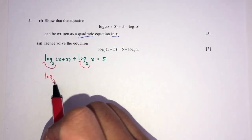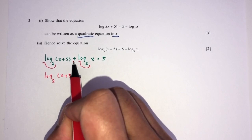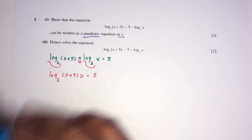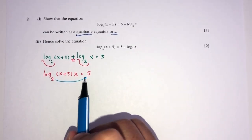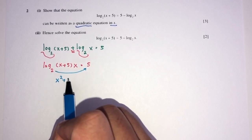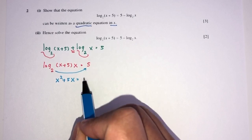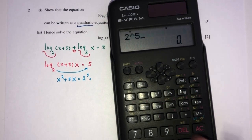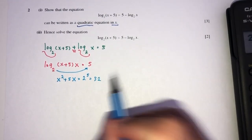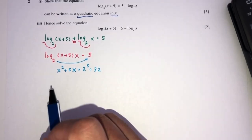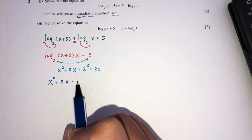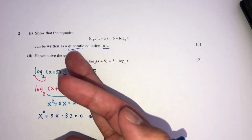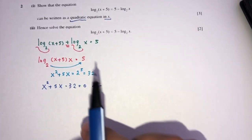You will have log base 2 of (x + 5) times x. To remove the log, send the base over: you will have x(x + 5) = 2 to the power 5, which is 32. So x squared plus 5x equals 32. Writing the equation properly with everything on one side: x squared plus 5x minus 32 equals 0. This is shown as required — we have shown this can become a quadratic equation in x.